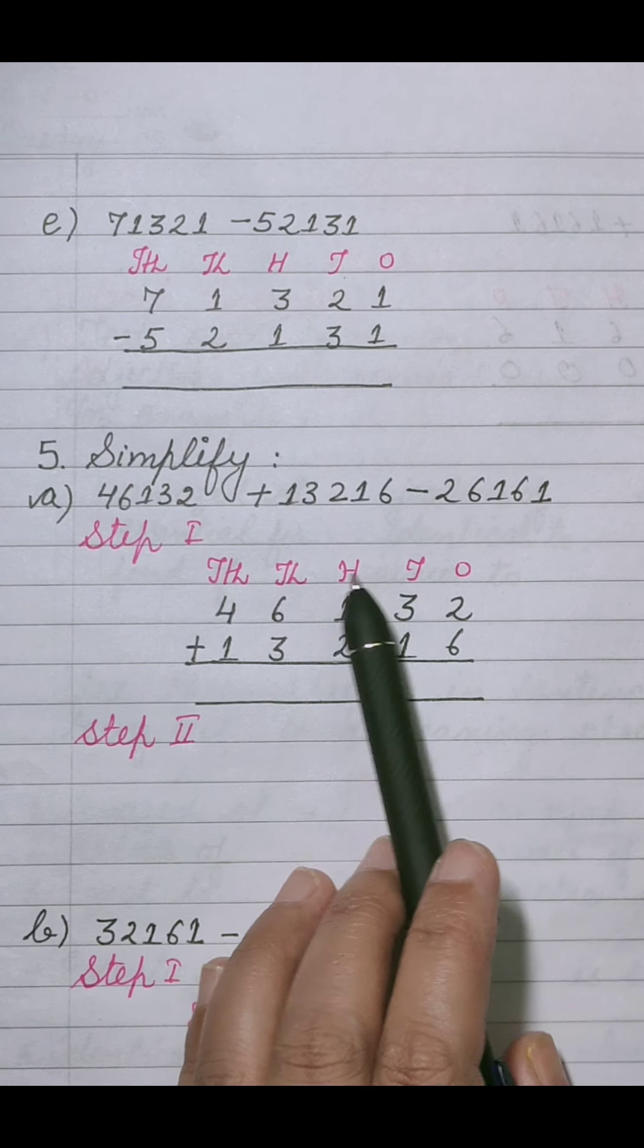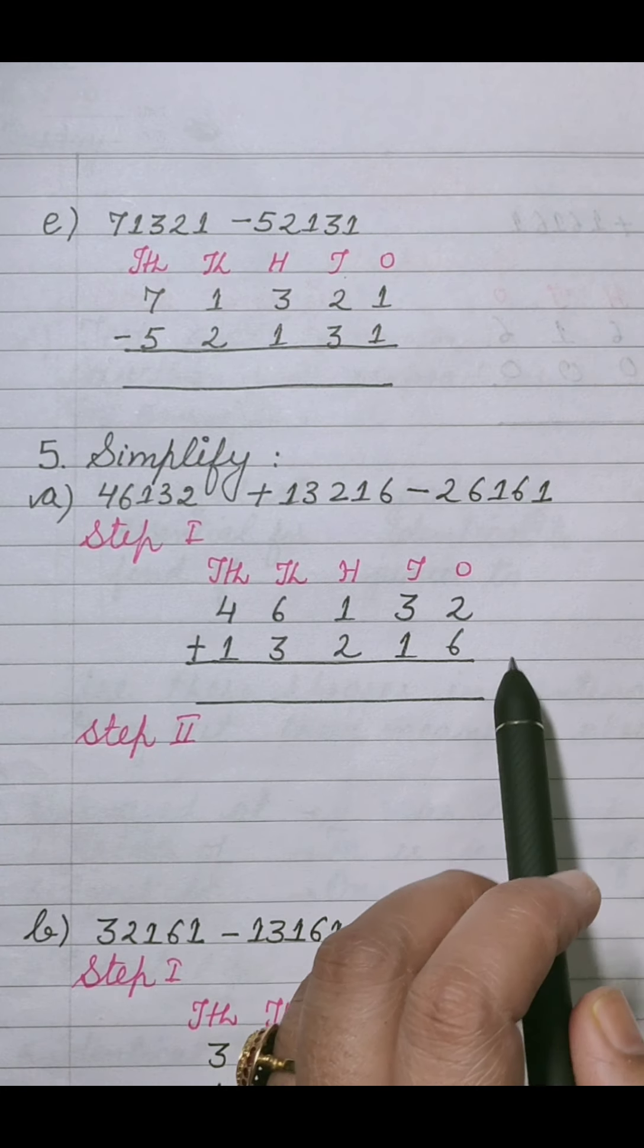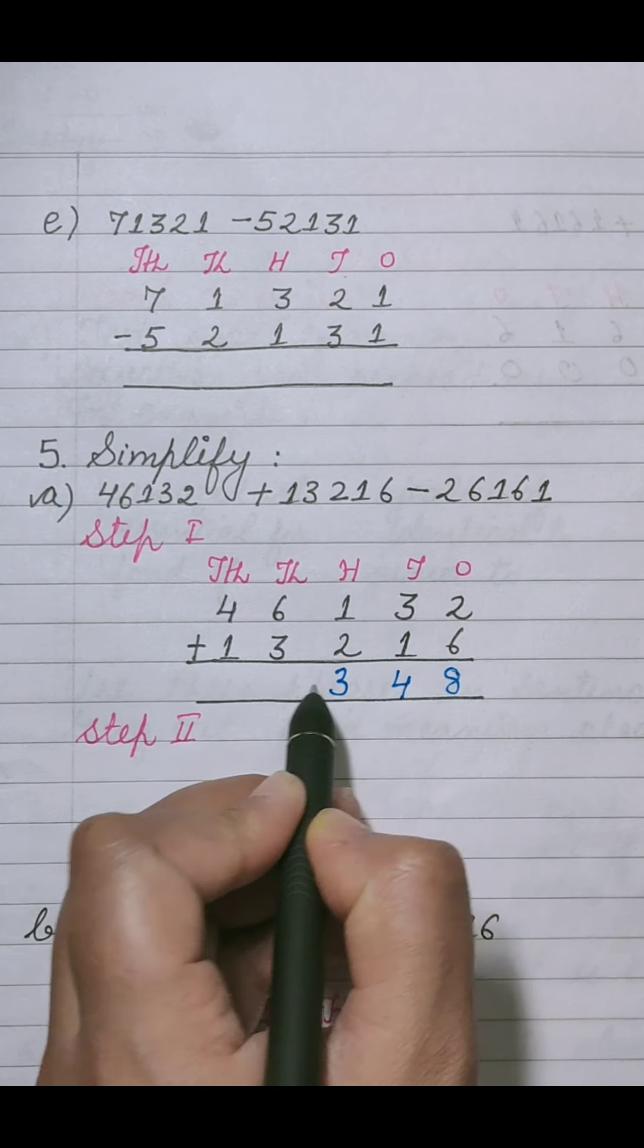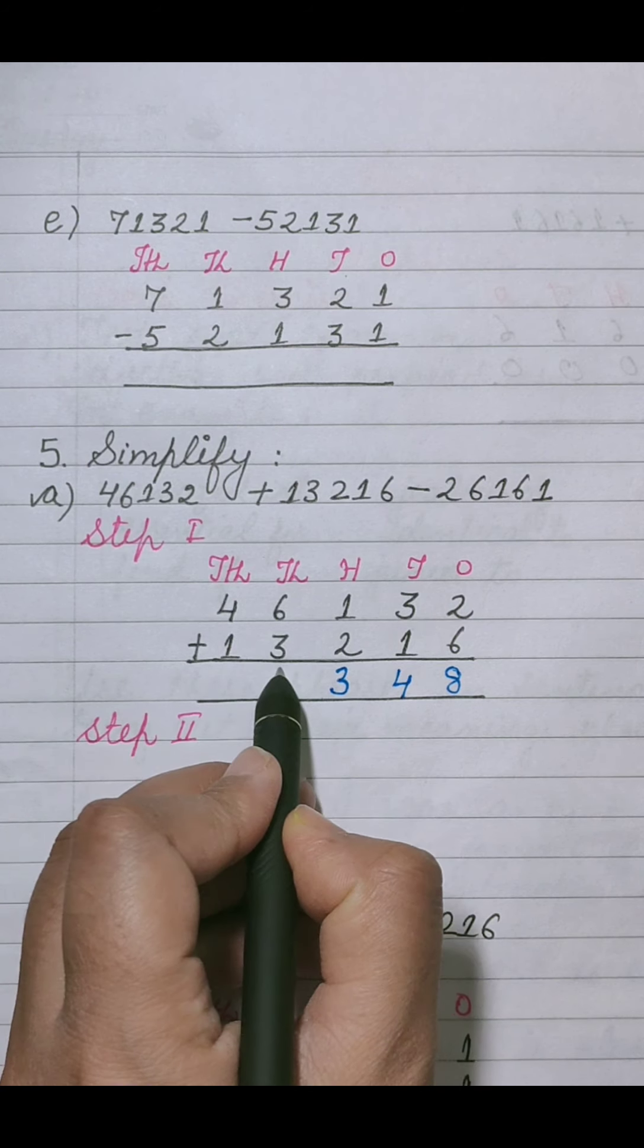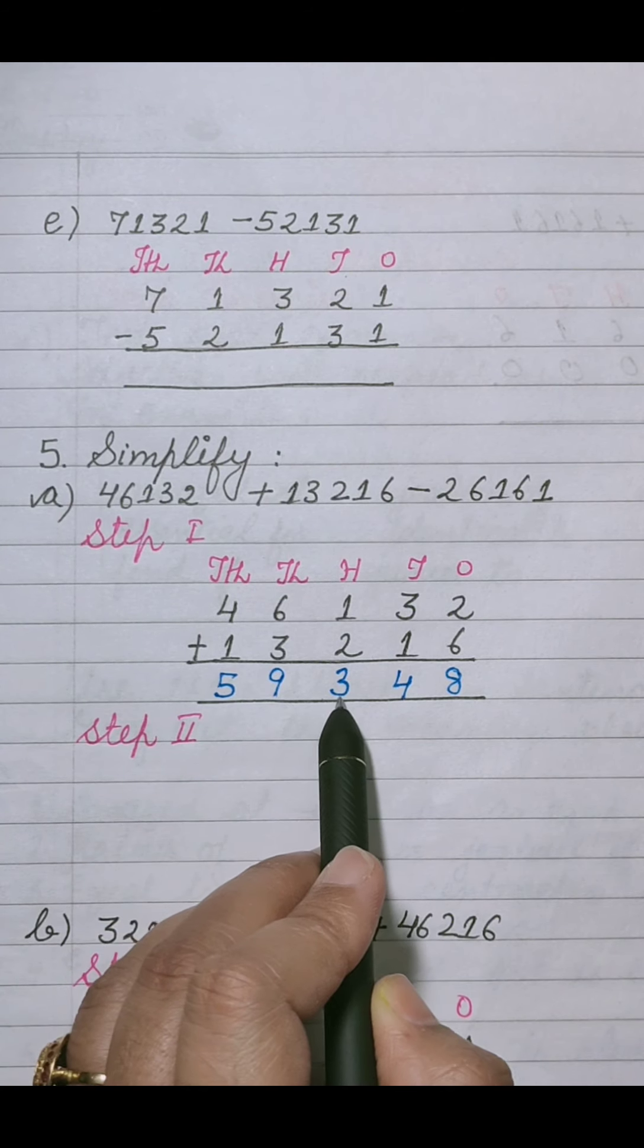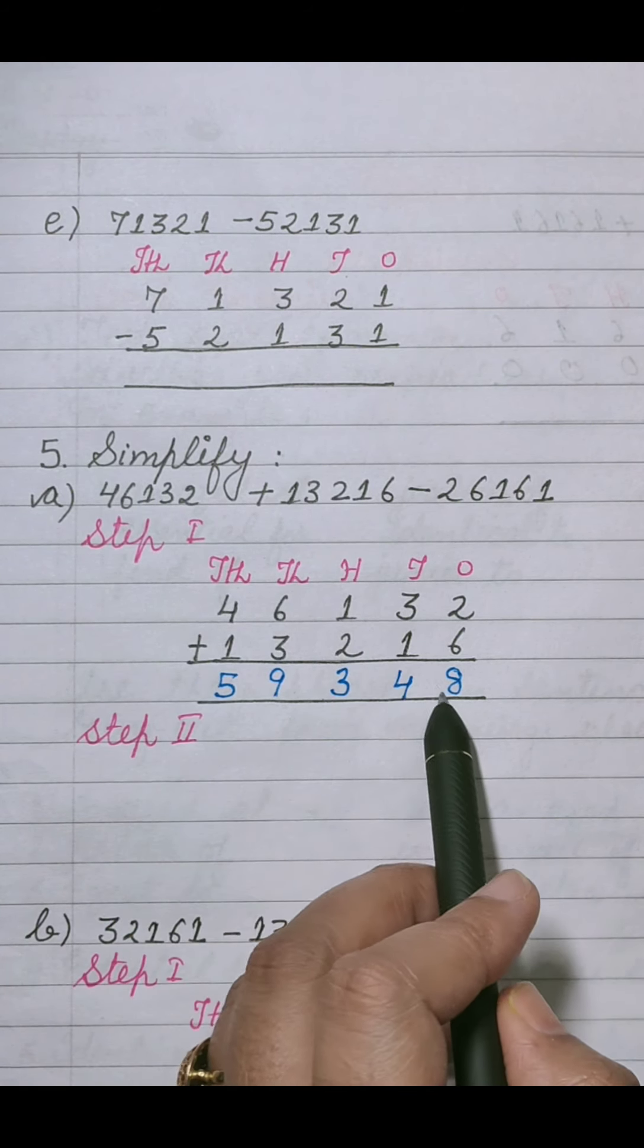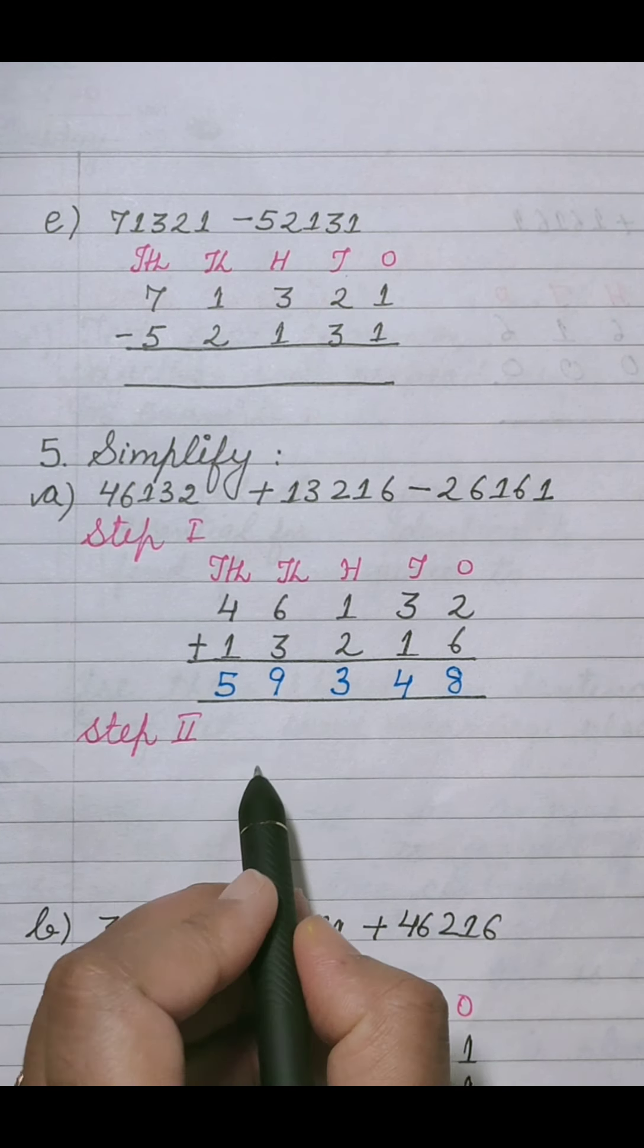One stands 100,000 and 10,000 place. We will solve it as 2 plus 6 is 8, 3 plus 1 is 4, 1 plus 2 is 3, 6 plus 3 is 9. 59348 is the addition, is the total of these two values. यह वाला जो number आया, इन दोनों numbers को प्लस करके यह value आई है.